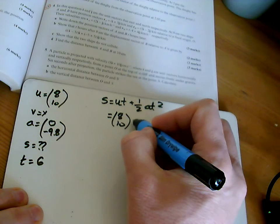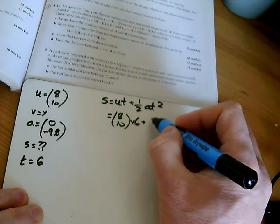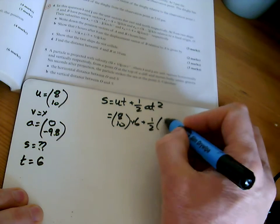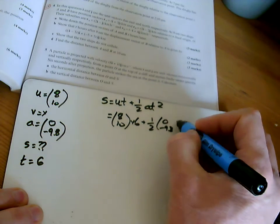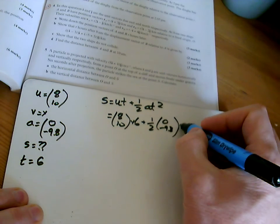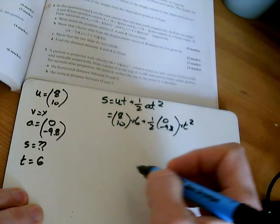...got (8, 10) times by 6, plus a half of (0, minus 9.8) times by 6 squared. And if we...